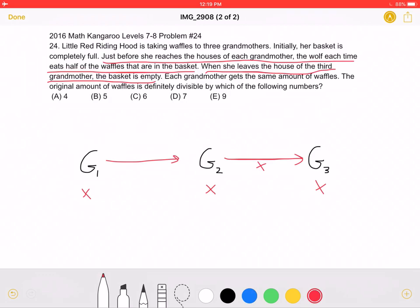Therefore, when she leaves her second grandma's house, she leaves with two x waffles, half of which will be eaten by the wolf, x, and the other half, x, will be given to the third grandma. Okay, so this means that when she arrives to her second grandma's house, she has x plus 2x, she arrives with 3x waffles, x of which will be given to the second grandma, and 2x of which will continue.